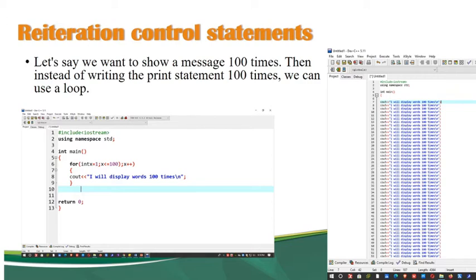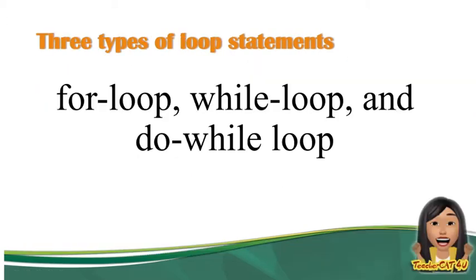For example, kailangan natin mag-display o mag-identify ng 10,000 numbers or 10,000 words. Sobrang haba na o sobrang dami na ng cout natin kapag nangyari yun. Through the use of looping, mas nasisimplify yung code natin. Meron tayong three types of loop statement: meron tayong for loop, while loop, and the do-while loop.